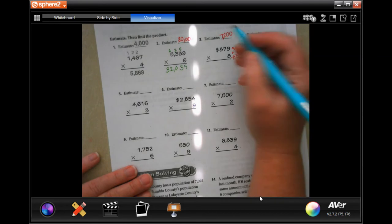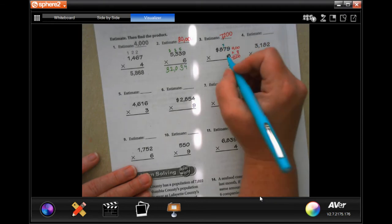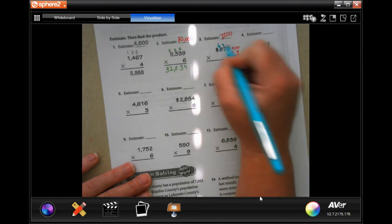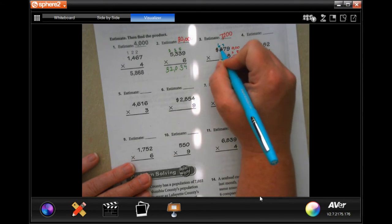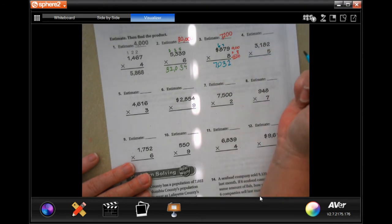Now our real work, 8 times 9, 72, carry our 7. 8 times 7, 56, plus 7 is going to be 63, carry our 6. 8 times 8 is 64, plus 6 is 7. 7,036.